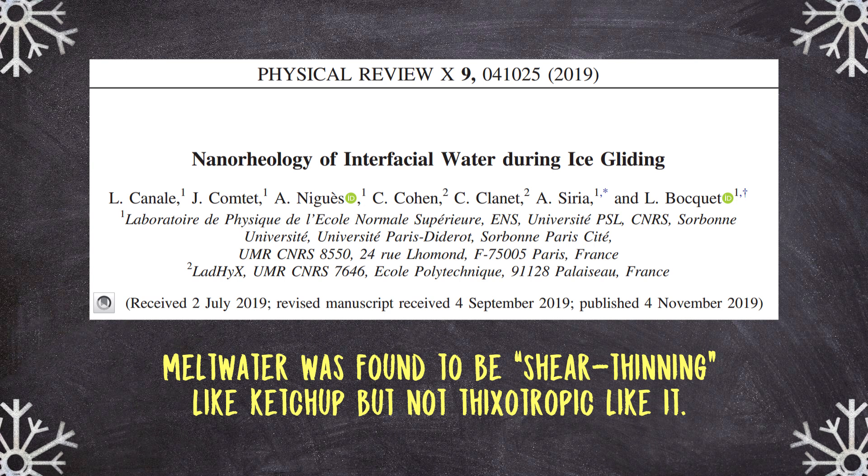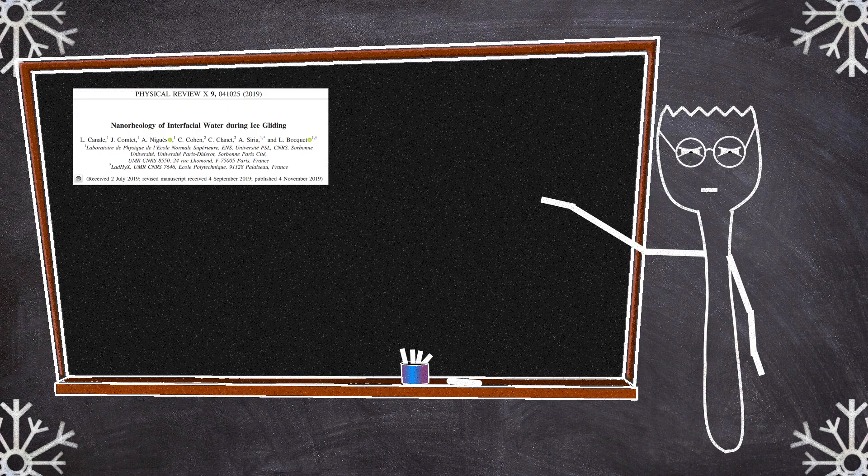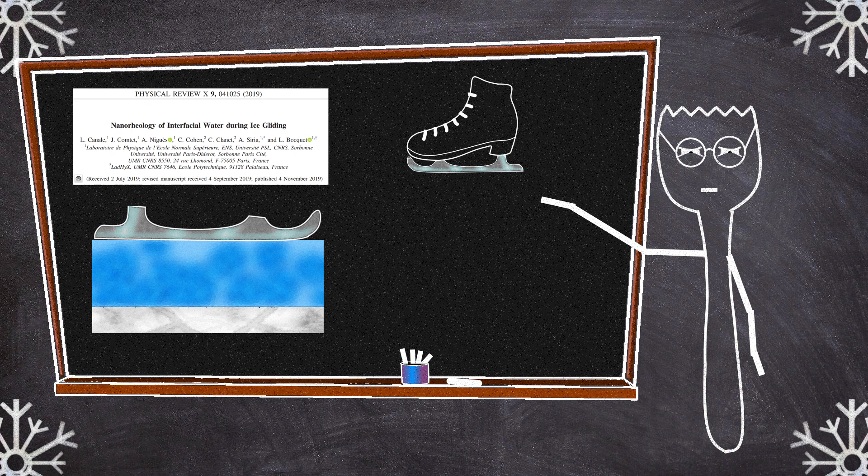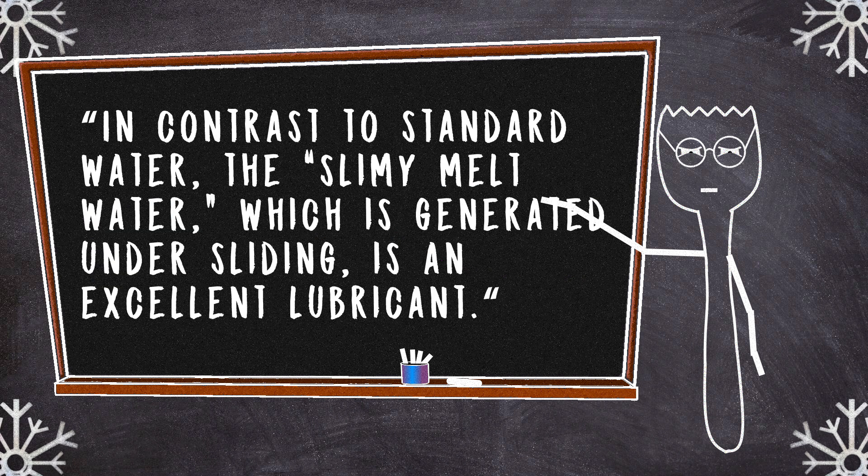So bringing this to a close, what this paper showed is that what makes skating possible is that there is a thin nanometer-sized layer of meltwater that forms. But this meltwater is a complex shear-thinning fluid, more like ketchup or olive oil than regular liquid water. As the authors of the paper put it, it's the slimy meltwater layer of only a few hundred nanometers that makes lubrication and skating possible. But of course, this paper isn't the end of the story.